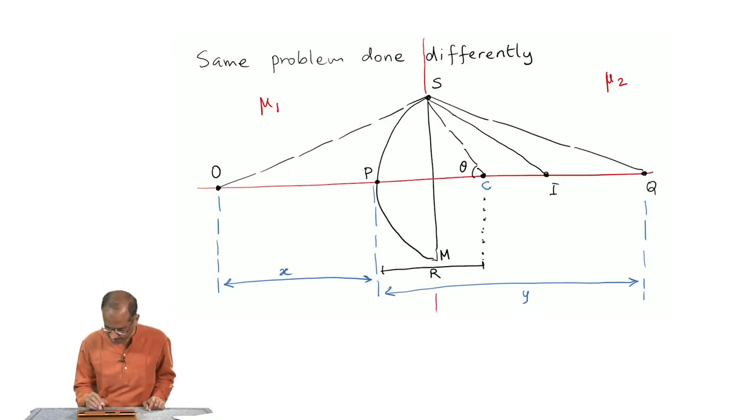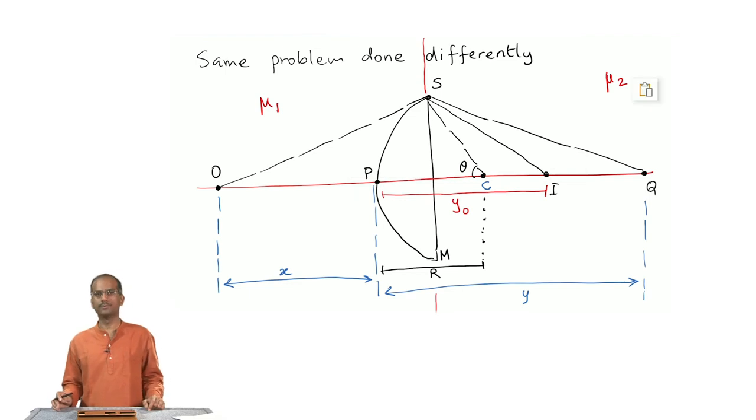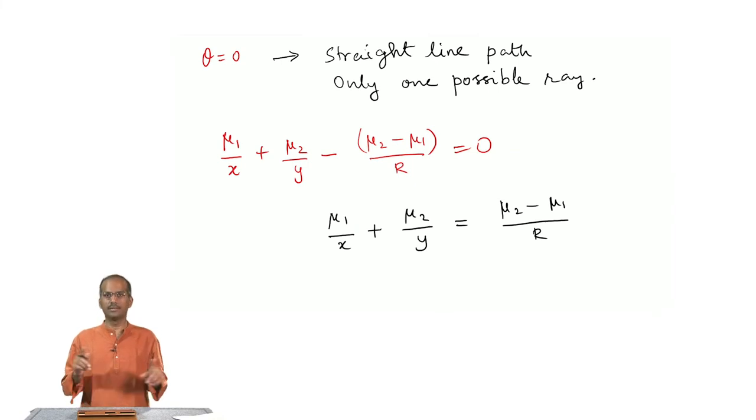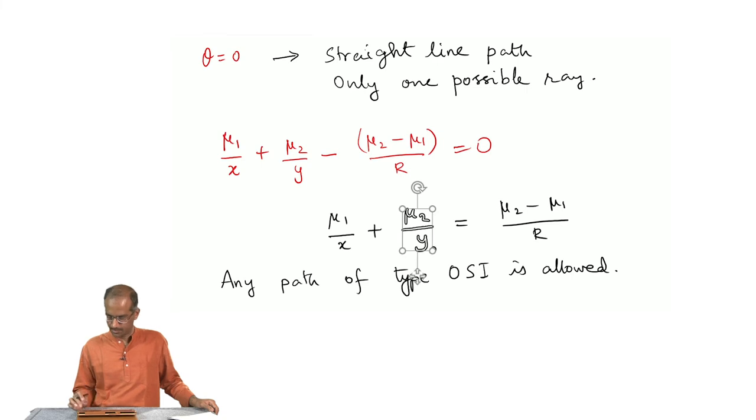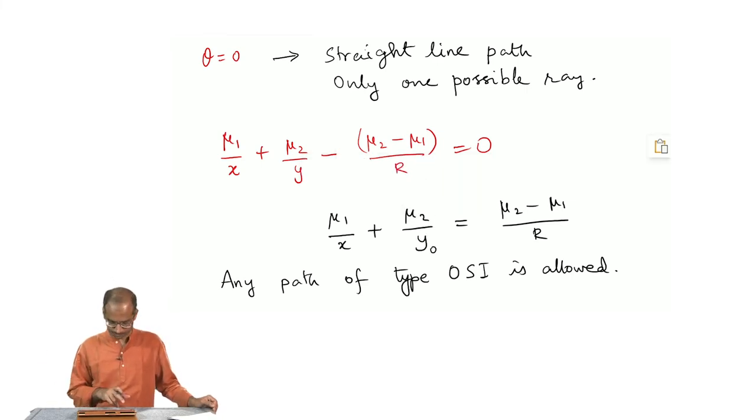If I designate this P i to be some y0 or the distance of the image from the point P, in that case all that this equation tells me is that many possible paths are allowed. The point here is that any path of type OSA is allowed, provided I identify y with y0, the distance of the image.